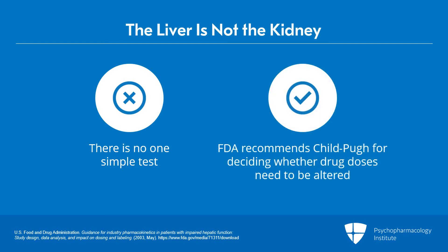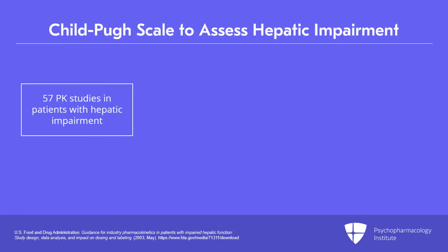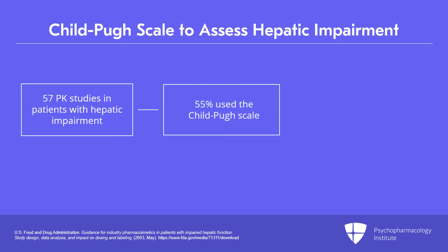How did the FDA end up recommending Child-Pugh as the best way to decide if drug doses needed to be altered for new medication starts? The FDA reviewed 57 pharmacokinetic studies in patients with hepatic impairment of varying degrees among new drug applications in the mid-90s. They found that 55% of those applications used the Child-Pugh scale to assess hepatic impairment.